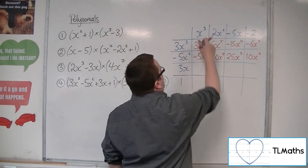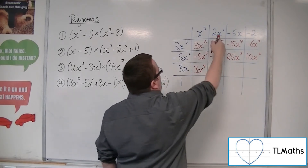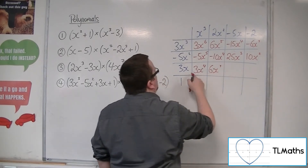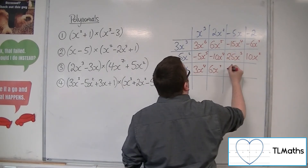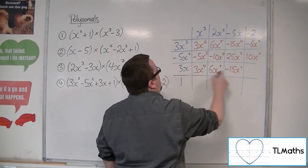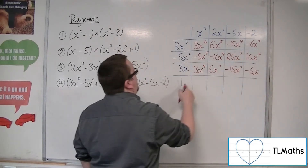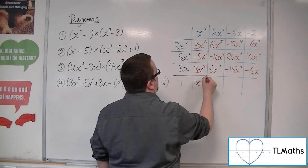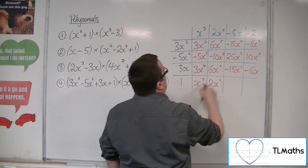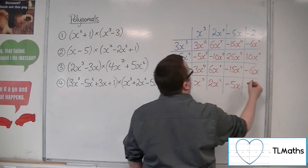3x times x cubed is 3x to the 4. 3x times 2x squared is 6x cubed. 3x times minus 5x is minus 15x squared. 3x times minus 2 is minus 6x. Then finally, 1 lot of x cubed, 1 lot of 2x squared, 1 lot of minus 5x, and 1 lot of minus 2.